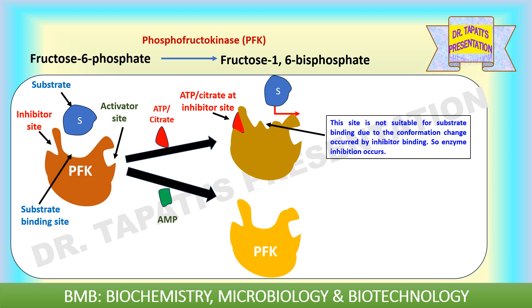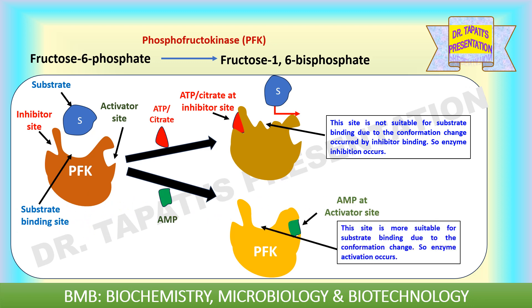Enzyme inhibition occurs when ATP or citrate binds. Whereas AMP is the activator of this enzyme — when AMP binds with PFK at the activator site, the conformation of the enzyme is changed in a way that is suitable for substrate binding. Therefore, activation occurs due to the presence of AMP. So in this case, ATP and citrate are inhibitors of PFK, whereas AMP is the activator of phosphofructokinase.